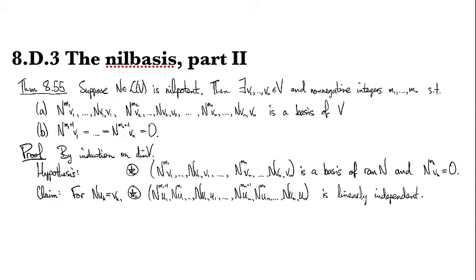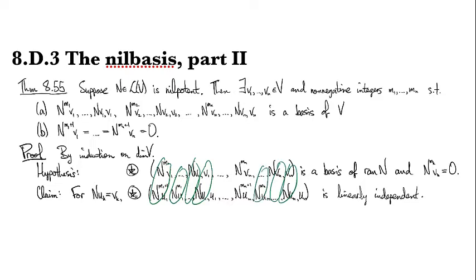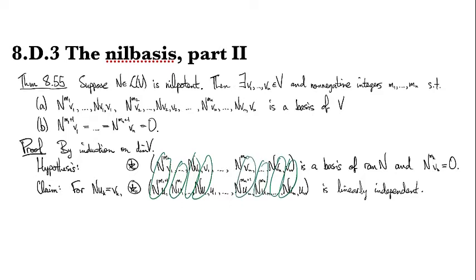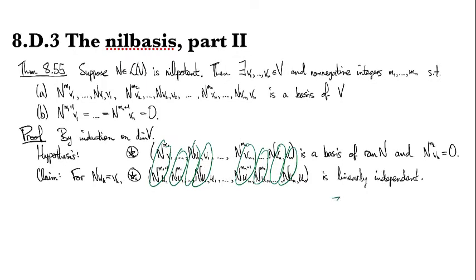Let's make some observations about the structure here. Because of the definition N(uk) = vk, the chains align: these guys are the same, these guys are the same, all the way through. That tells us that the star-u list equals star-v, and then we just have to add in the missing u's — so union {u1, ..., un}.